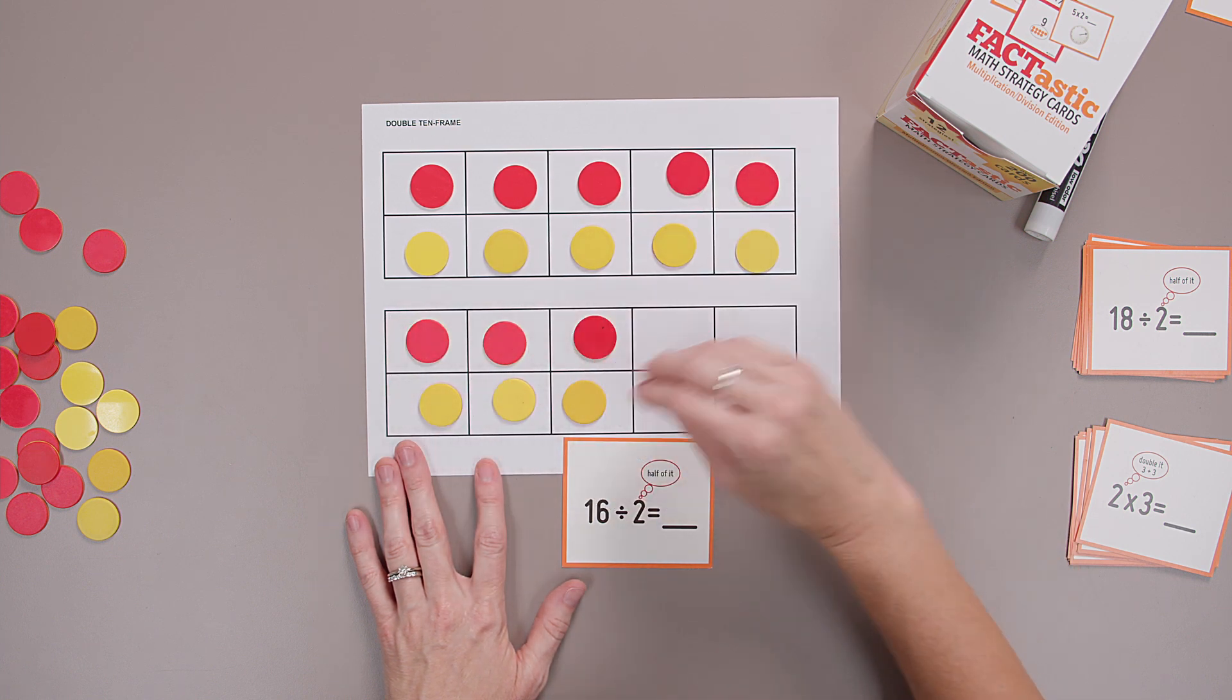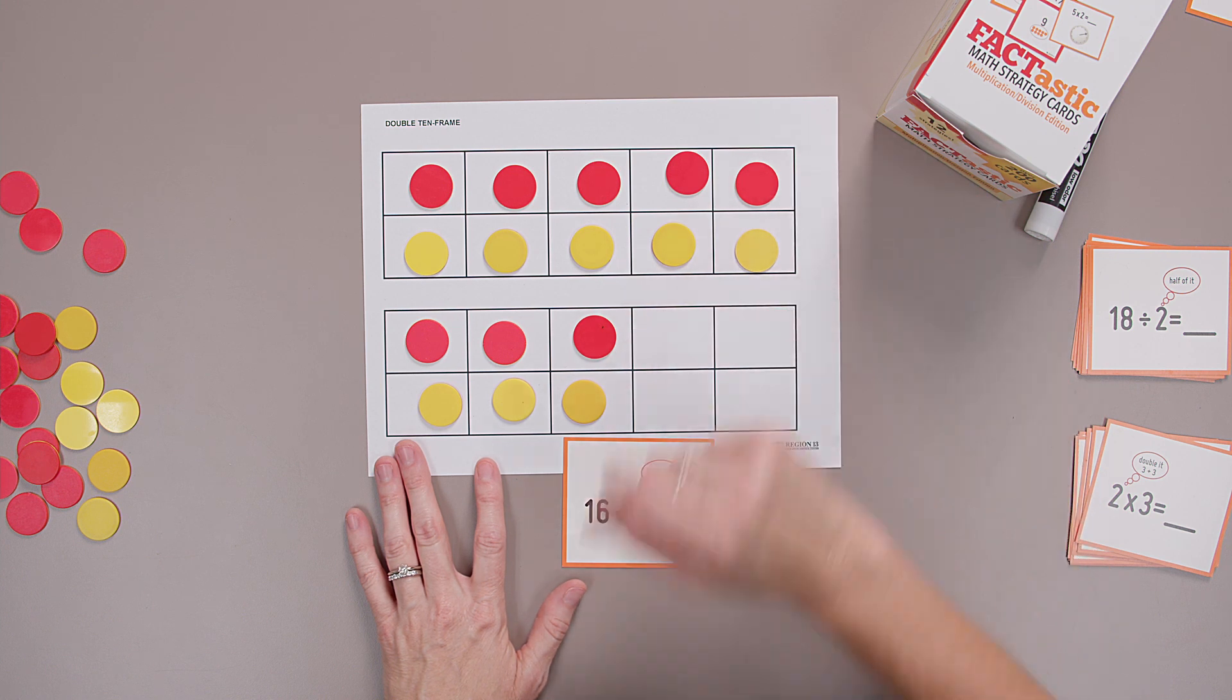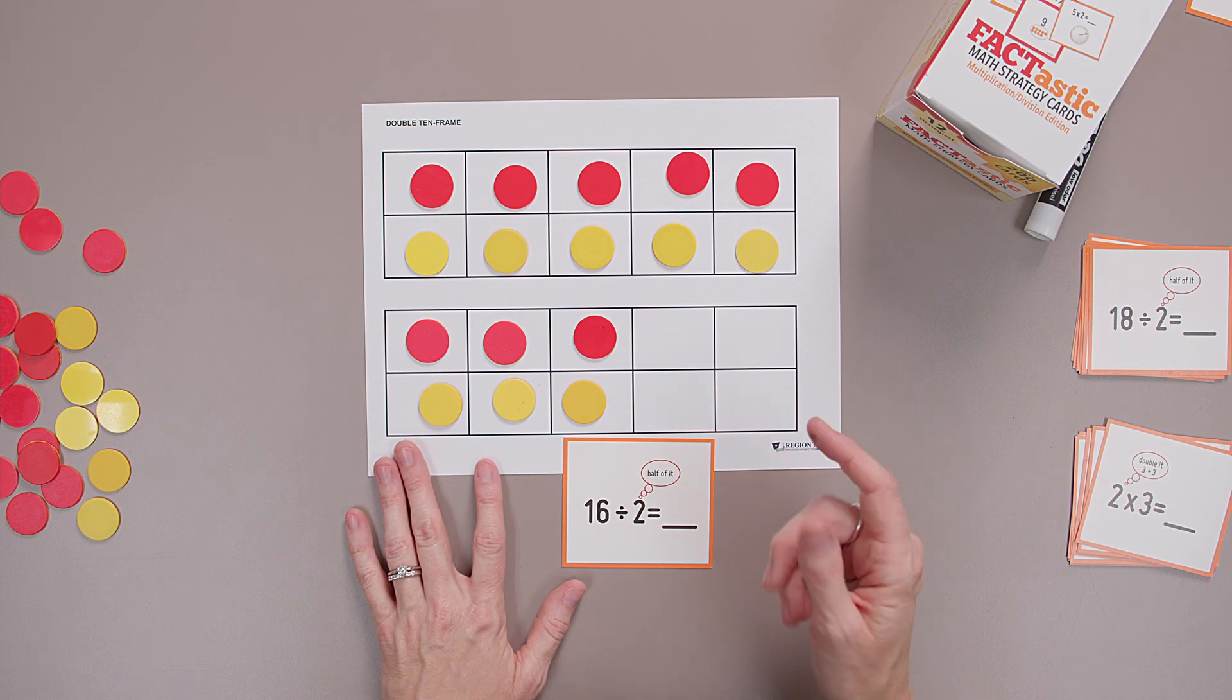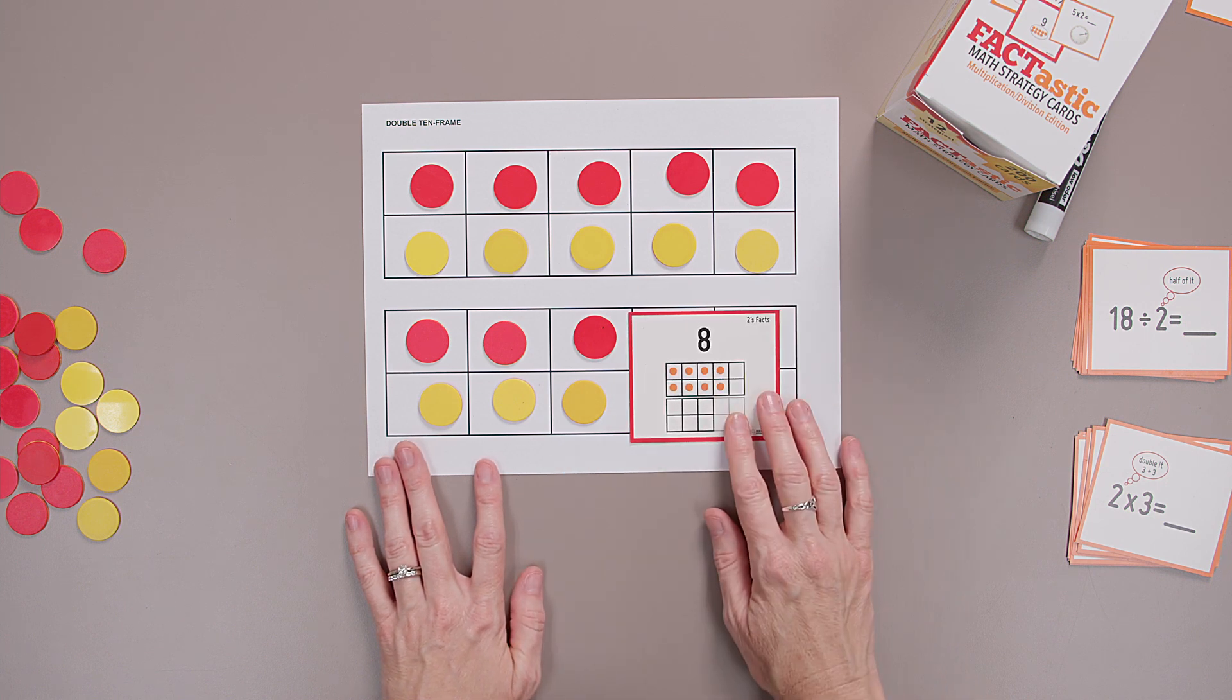Now I have two equal groups. One group of red is eight. The other group of yellow is eight. Sixteen divided by two is eight. Excellent.